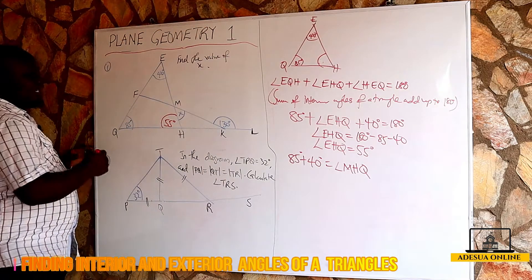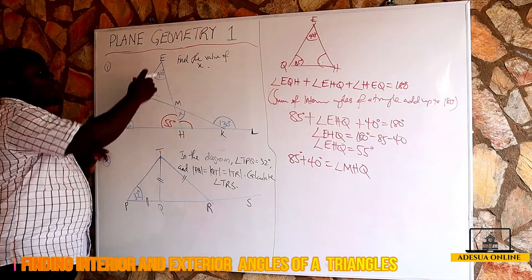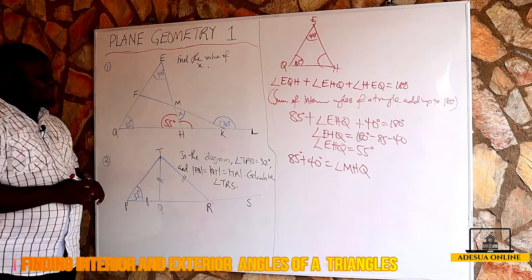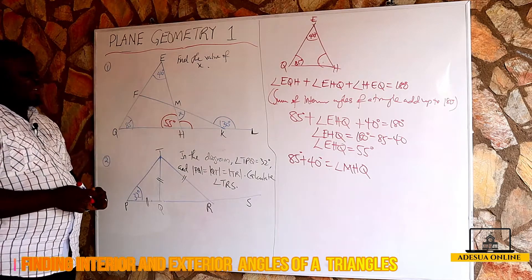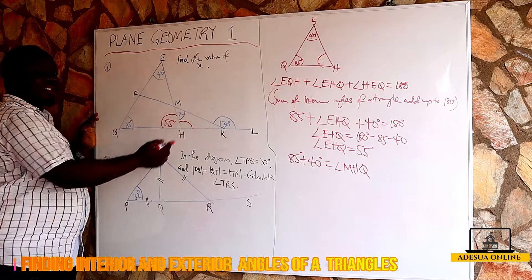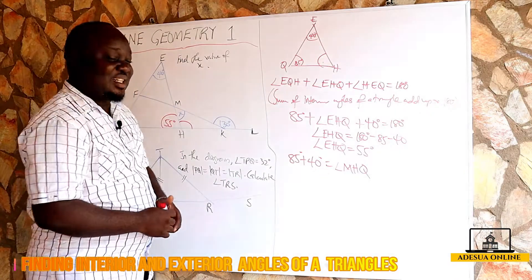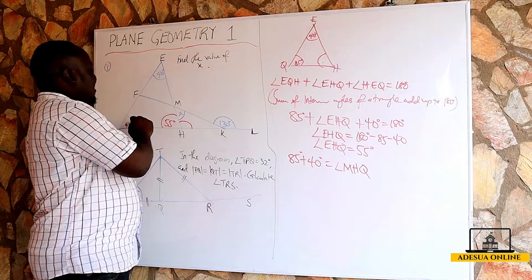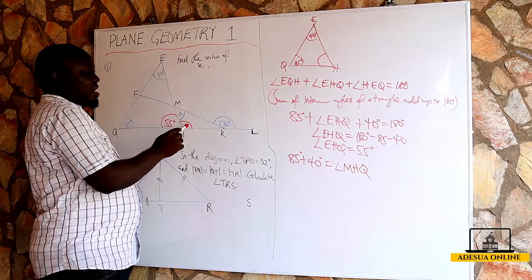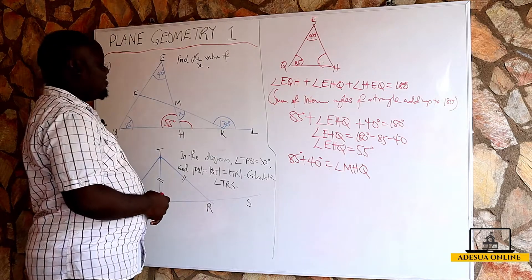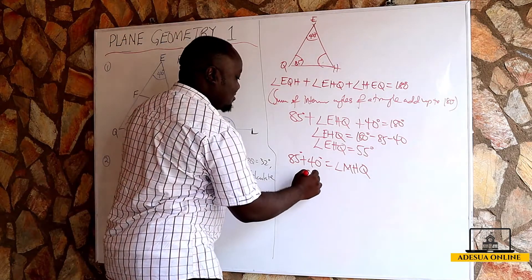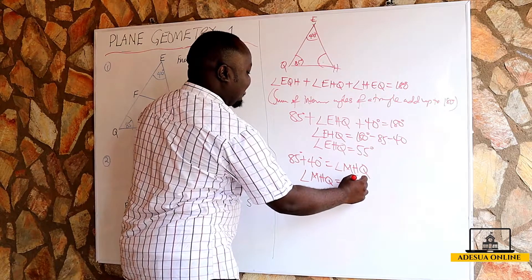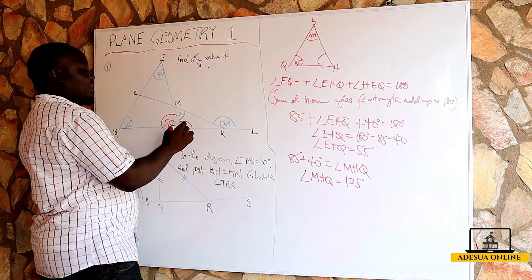Angle MHQ and angle EHQ are the same angle, because EH is a straight line, so MHQ and EHQ give the same answer. The interior angles of 85 and 40 give us the exterior angle here, so 85 plus 40 equals 125 degrees — angle MHQ is equal to 125 degrees.